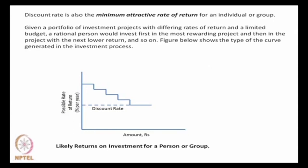Discount rate is actually the minimum attractive rate of return for an individual or a group. Suppose these are projects, each individual project requiring a certain amount of money and giving a certain rate of return. Suppose they are arranged in decreasing order — the project that gives the maximum rate of return is plotted first and requires a certain amount of money. Then the next one gives a little less rate of return. Naturally, I will choose the one that gives me the highest rate of return first, then the next, and continue until my total money is exhausted.